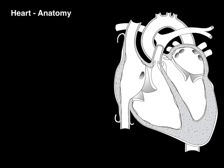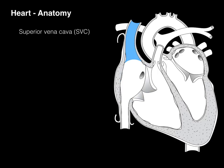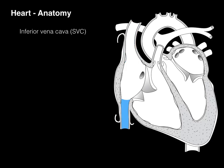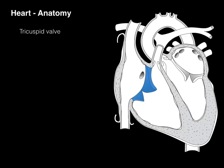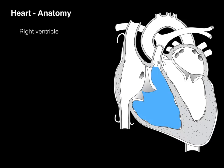Inside the heart, we have chambers and valves and vessels. There's the right atrium — it collects all systemic blood and coronary circulatory blood. The superior vena cava brings blood from the head, neck, and upper limbs; in fact, every tissue above the diaphragm brings it to the right atrium. The inferior vena cava brings blood from all tissues below the diaphragm into the right atrium. And the coronary sinus returns coronary blood to the right atrium. This blood then goes through the tricuspid valve, also called the right AV valve, and enters the right ventricle.